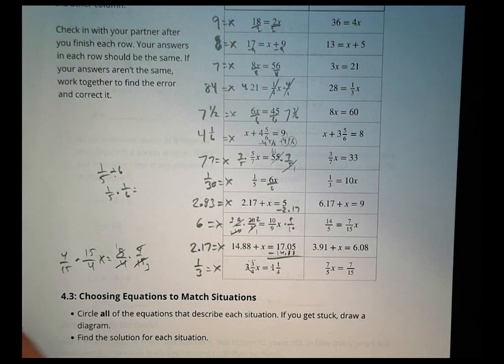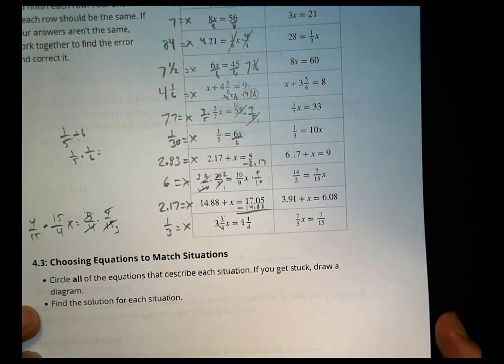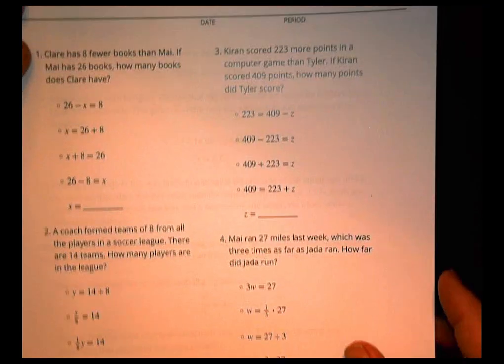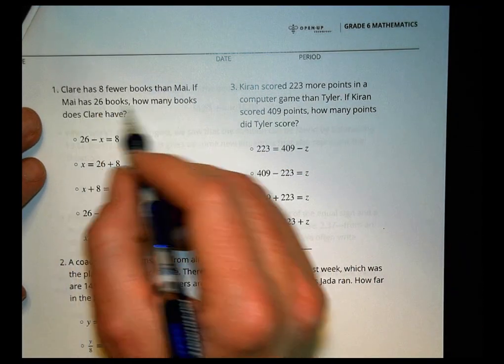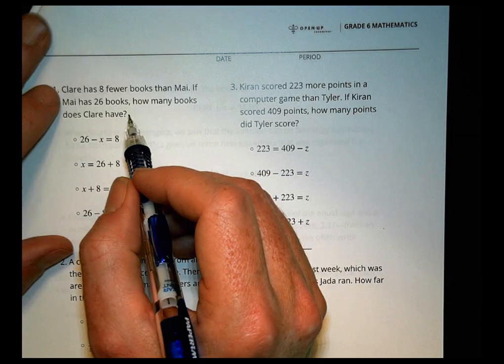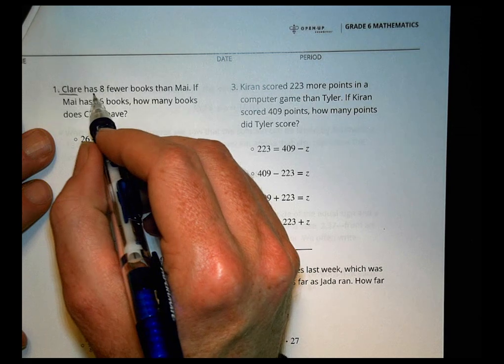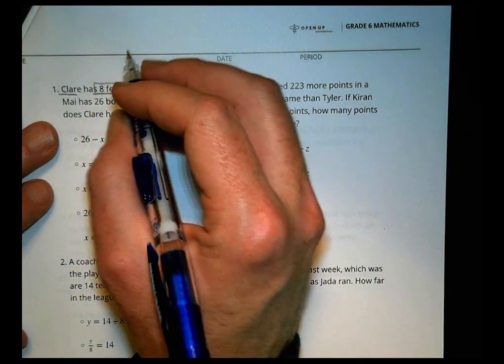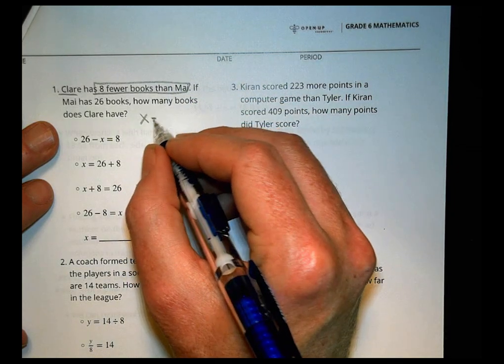For activity three, it says choosing equations to match situations. That says circle all the equations that describe each situation. And if you get stuck, draw a diagram and then find the solution. So let's take a look at these. Number one. It says Claire has eight fewer books than May. If May has 26 books, how many books does Claire have? So what do we know? We know that Claire has eight fewer books than May.